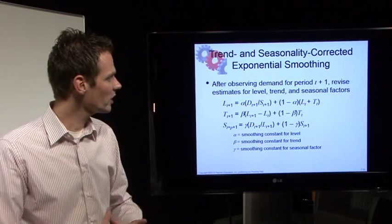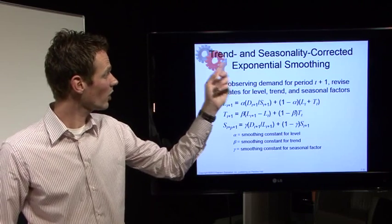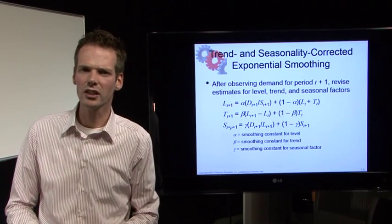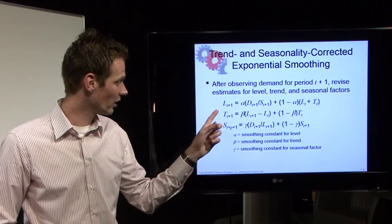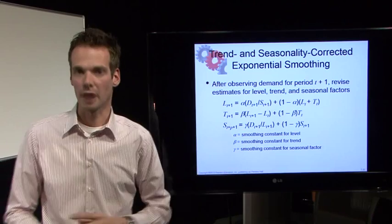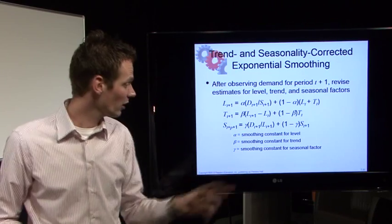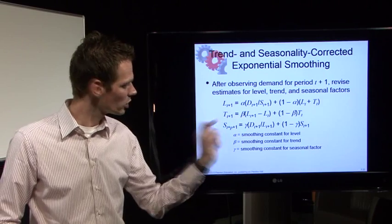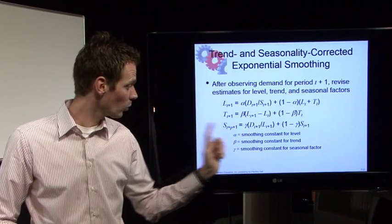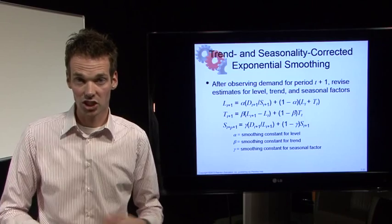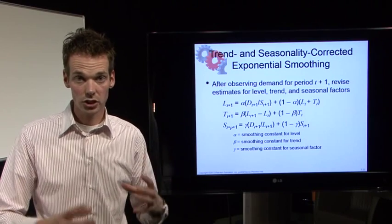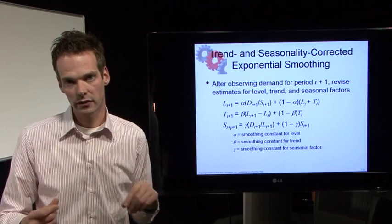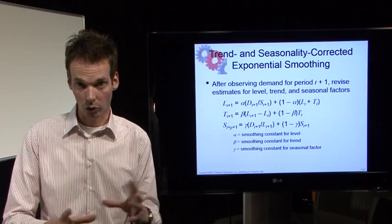When we have time trend and seasonality corrected exponential smoothing, we have an alpha, a beta, and a gamma. The alpha we always use with level, the beta we always use with trend, and the gamma we always use with seasonality. Please recall that and do not use alpha, beta, and gamma otherwise.